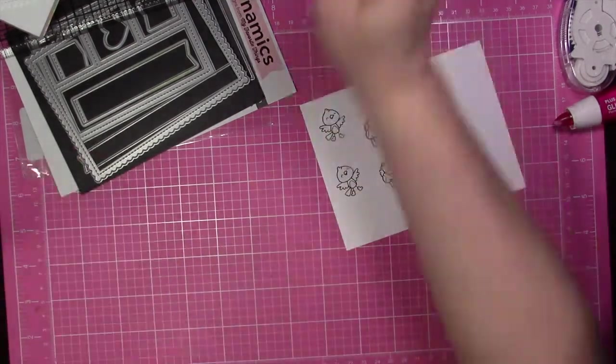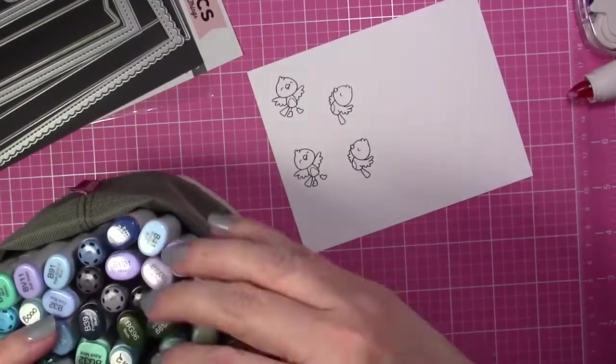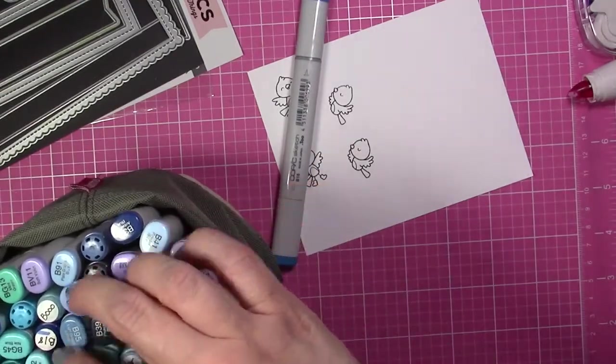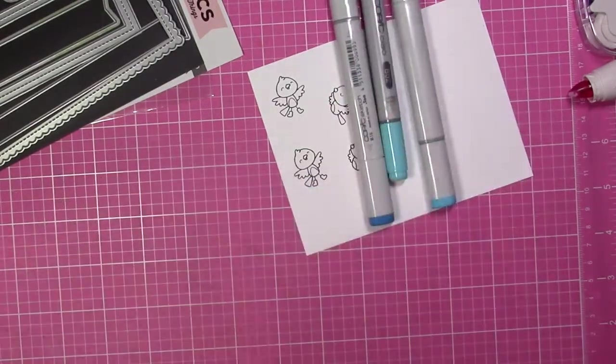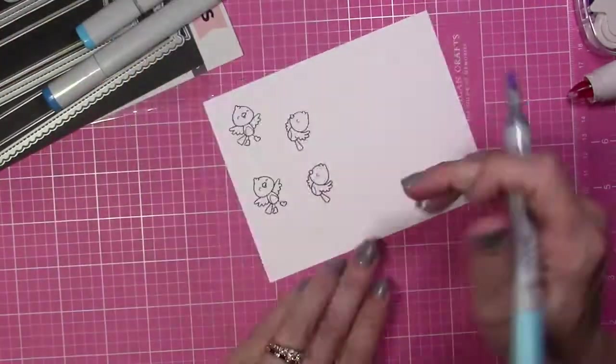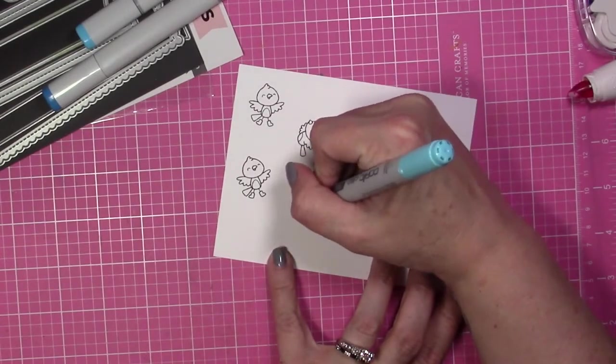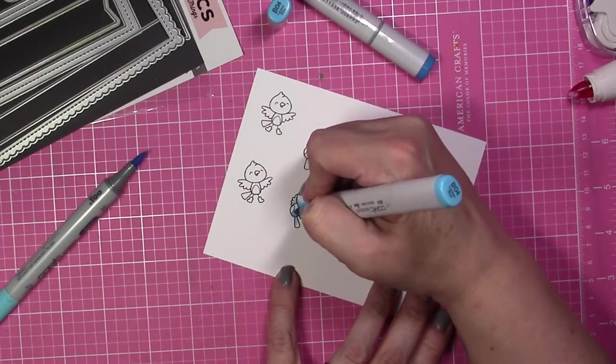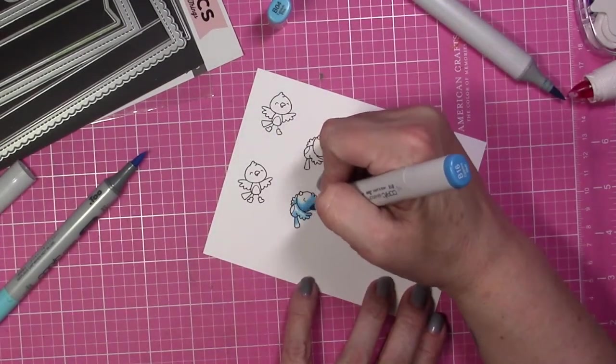I started out with some blue Copic markers in the video here, but I ended up not using the image at the end. But I'm starting out with B02, B04, and B16 to color in the bird's bodies. Then I used Y17 for the beaks, and for the bellies I used C00, C1, and C3 just to add a little bit of shading into the belly areas there.